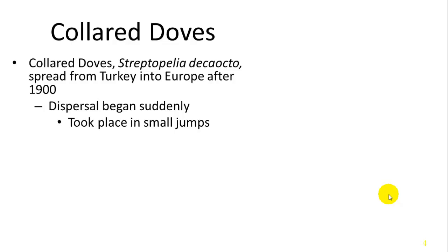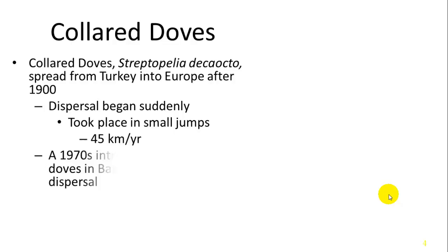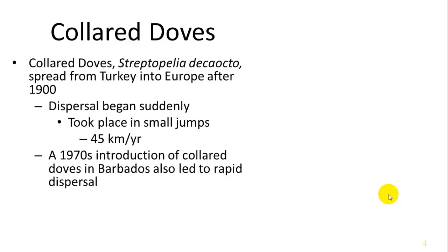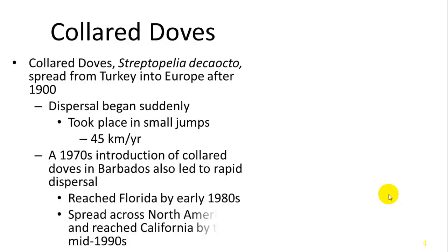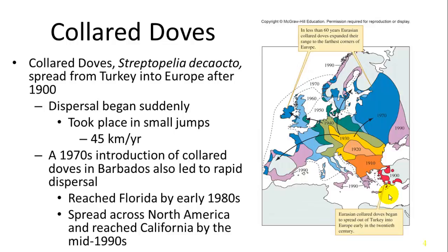They were dispersing at a fairly fast rate, about 45 kilometers per year, and gradually continued north more and more until they spread all over Europe. They were also introduced into the Barbados Islands in the 1970s, and by the 1980s had reached Florida. Now they are spread all the way across North America from coast to coast.